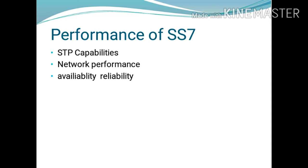Network performance includes the number of signaling points (SPs) and signaling delays. Availability and reliability refer to the ability of the network to provide service in the event that an STP fails.